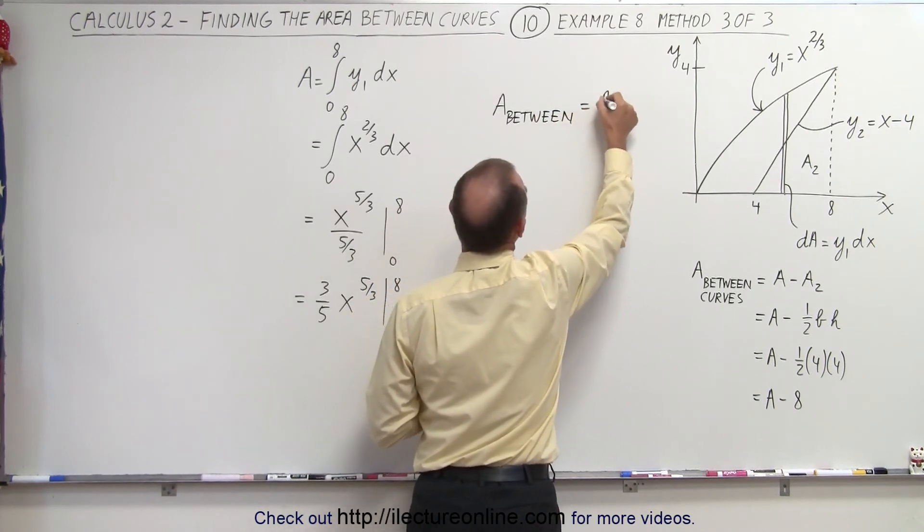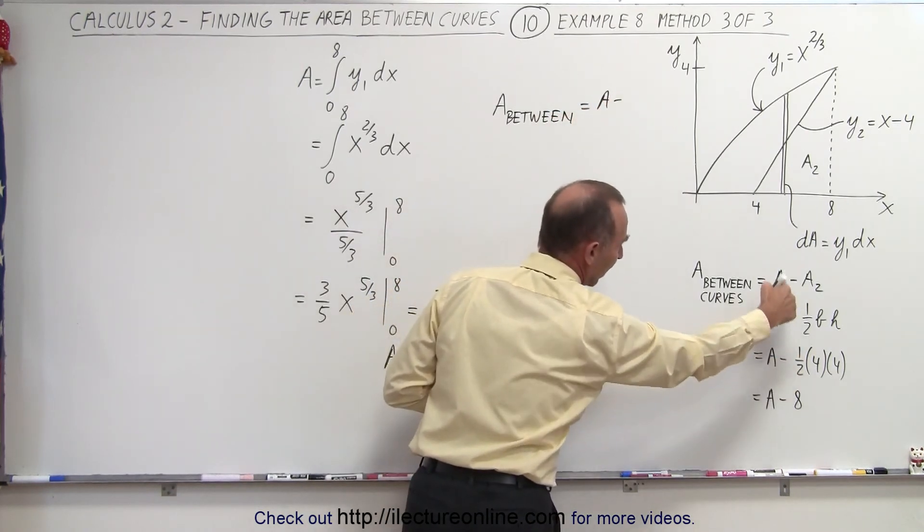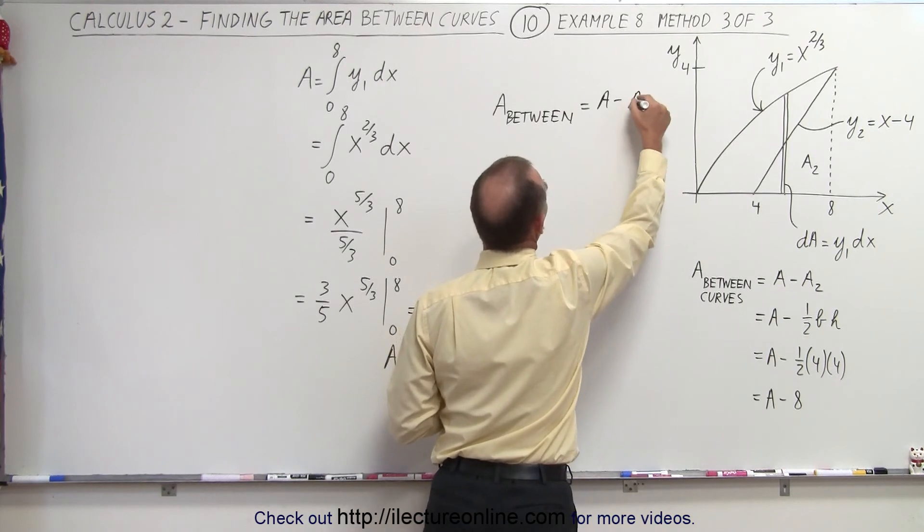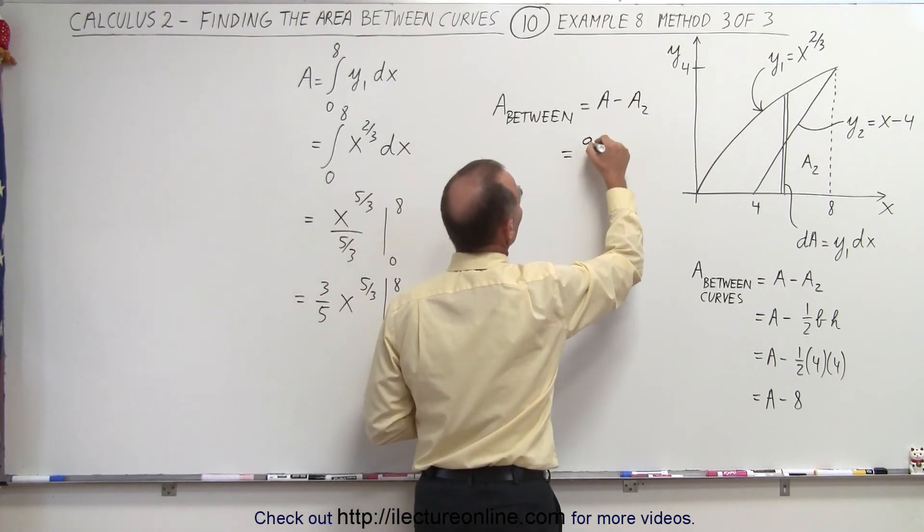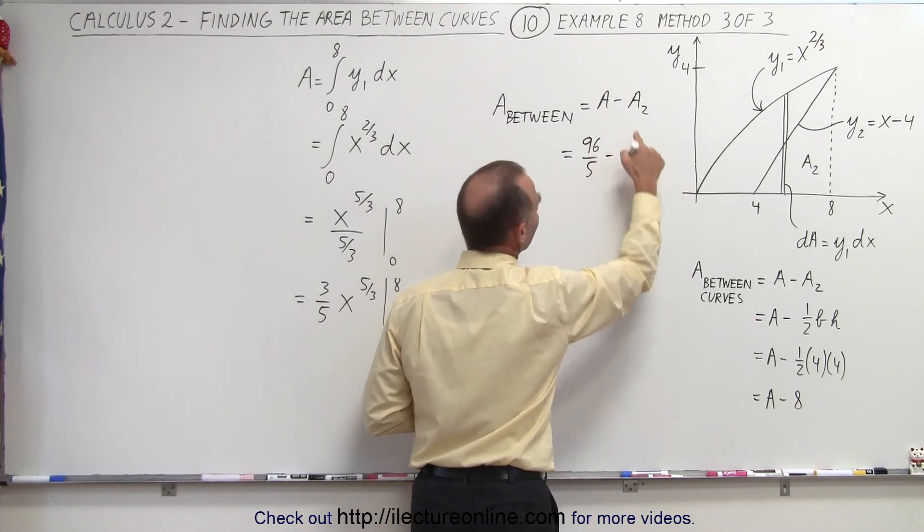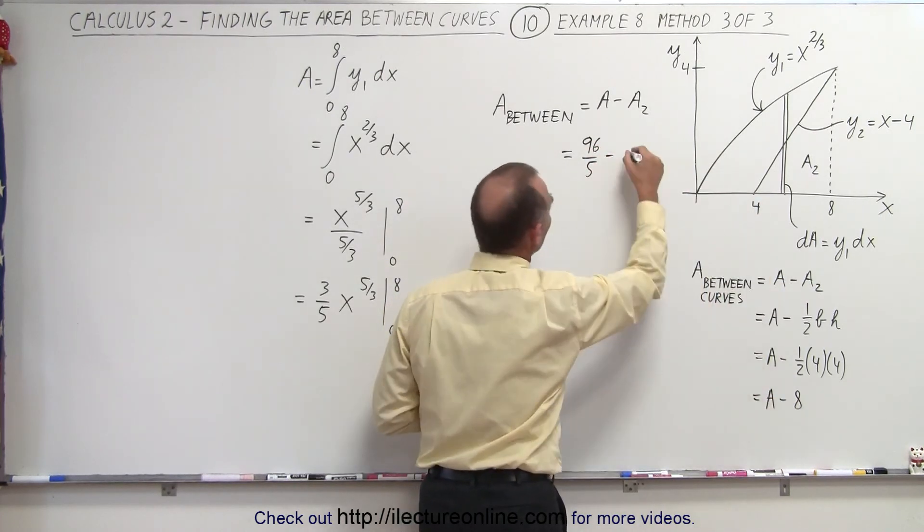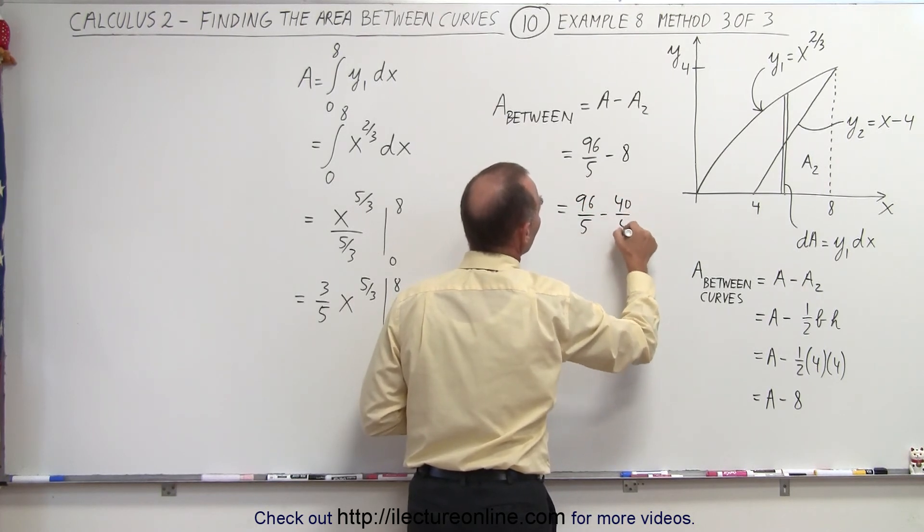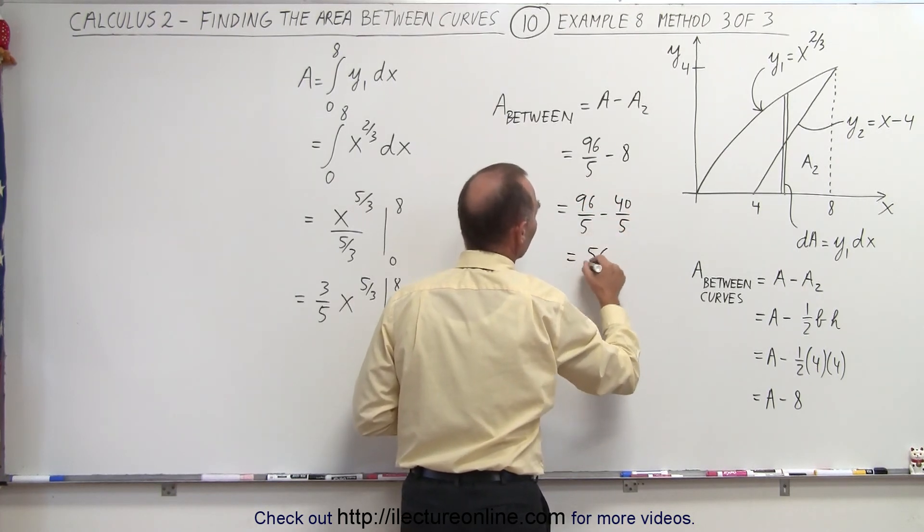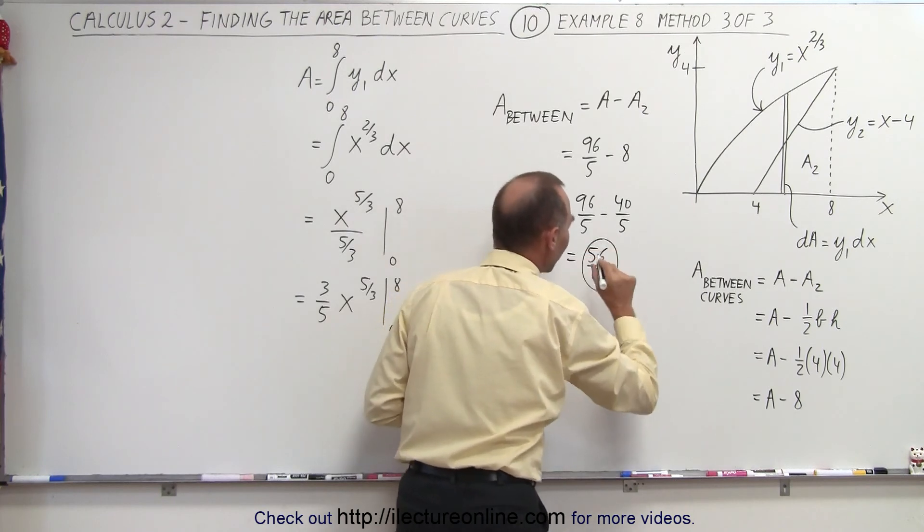So it means the area between the two curves will be equal to A minus what we found that was the area of the rectangle, that would be A2. So this is equal to what we found over here, 96 over 5 minus A2 which was 8, so that would be equal to 96 over 5 minus 40 over 5, which is indeed 56 over 5.